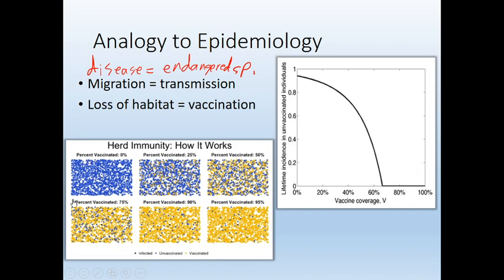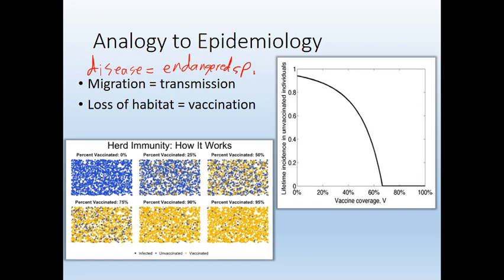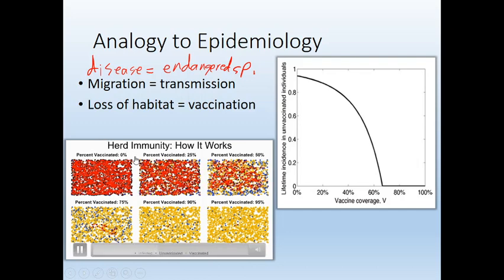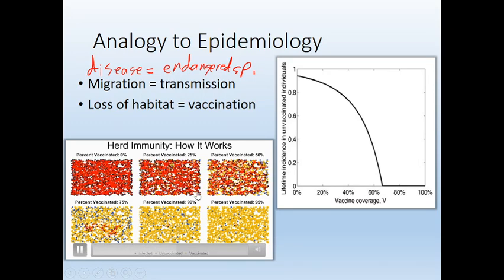This video shows what happens — this idea of herd immunity that many of us know about. When you have the habitat basically all available to the disease, that disease can move through the population freely. This is like a pristine habitat with a bunch of different patches. As we start to lose some of the habitat to the vaccine, it still doesn't matter much. But as we start to lose a decent amount of habitat, we see that our species is starting to go away.